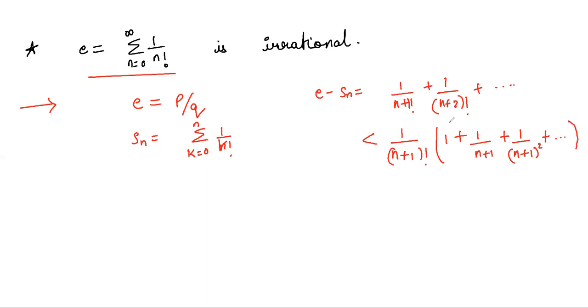Now this is a geometric series. So that is equal to 1 over n plus 1 factorial times this is a geometric series with common ratio 1 over n plus 1.